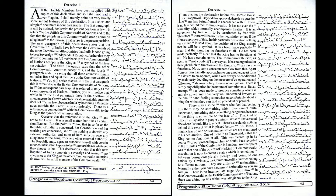They desire to continue her full membership of the Commonwealth of Nations, accepting the king as a symbol of the free association. The third paragraph says that the other Commonwealth countries accept this, and the fourth paragraph ends by saying that all these countries remain united as free and equal members of the Commonwealth of Nations.